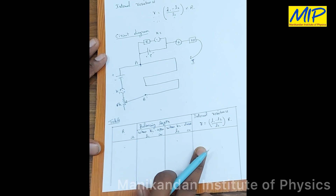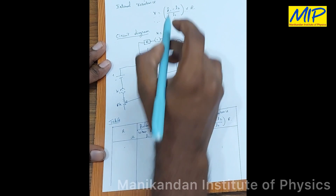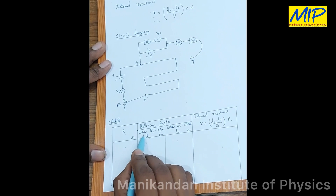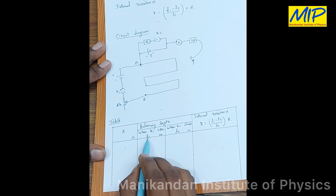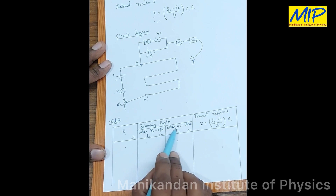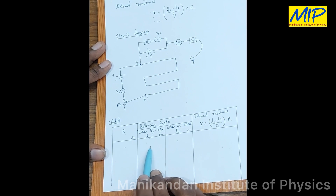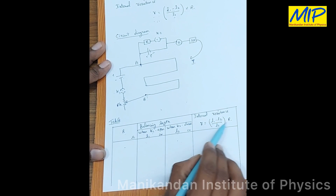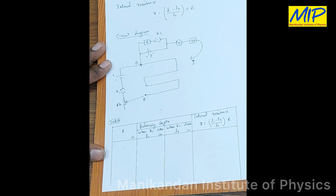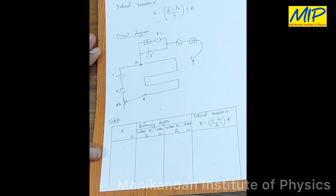Using this table I am going to explain how to find the internal resistance of the cell. In this expression, l1 is the balancing length when K2 is in open condition. When K2 is in closed condition we get the balancing length l2. Taking l1 from this column and l2 from this column, and substituting l1, l2, and the R value from the resistance box, we are able to find the internal resistance of the cell.